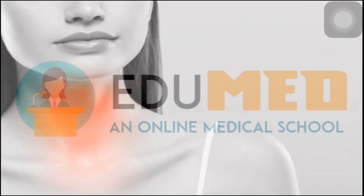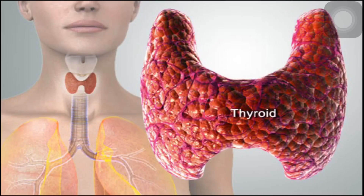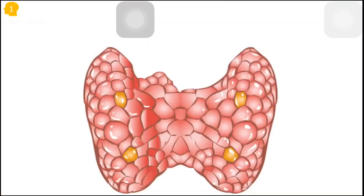Welcome to Edumet thyroid hormone synthesis. The thyroid gland in our body produces two major hormones: T3 and T4. T3 is triiodothyronine and T4 is tetraiodothyronine. We can easily understand thyroid hormone synthesis in four simple steps.